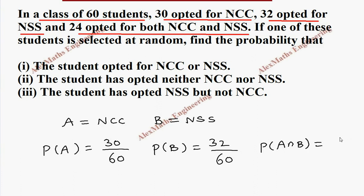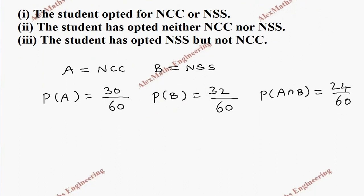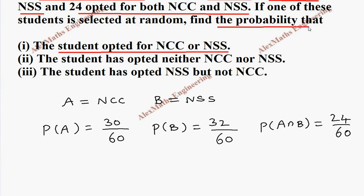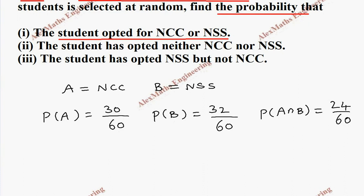both NCC and NSS which is 24 by 60. Now the first subdivision: the student opted for NCC or NSS. We need to find its probability. As per the formula, we have to find P of A union B, so it is P of A plus P of B minus P of A intersection